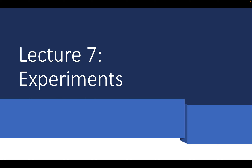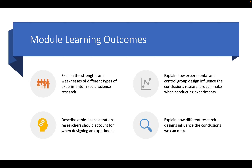This podcast is on experiments in political science research. In this module, we'll explain the strengths and weaknesses of different types of experiments in social science research. We'll also explain how experimental and control group design influenced the conclusions research can make. Experiments have become very popular in political science research, so it does behoove us to learn a little bit more about the technique.